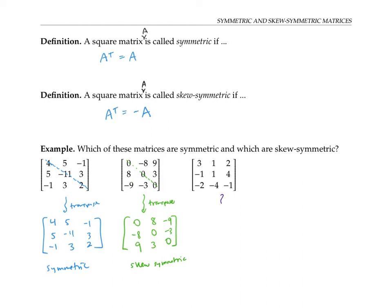What about this third matrix? What happens when we take its transpose? We definitely don't get the same matrix — for example, this entry here is one, but the corresponding entry in the original is negative one. So the matrix is not symmetric. And we don't quite have the negative of the original either; most of the entries are the negatives of their corresponding entries, but not the ones along the diagonal. So it can't be skew symmetric either. This matrix is neither.